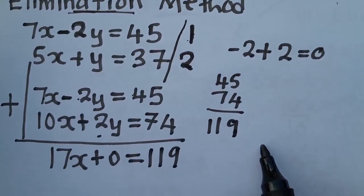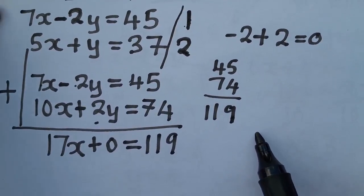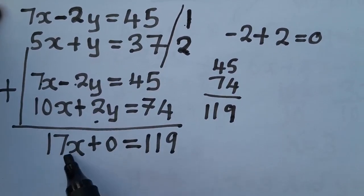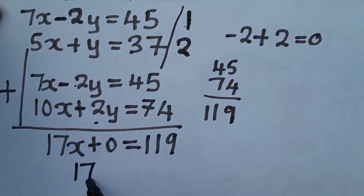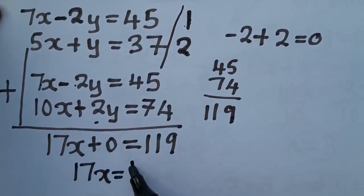When you reach there, what's the next thing? Here, what is 17x plus 0? Just 17x, which is equal to 119.